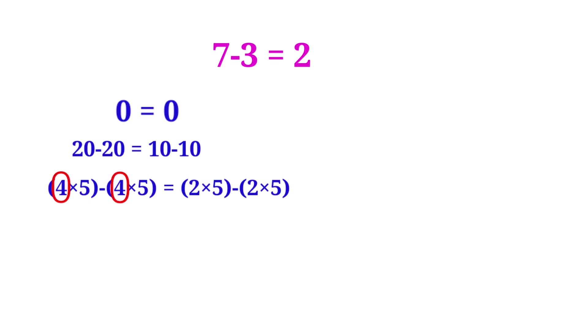Now see here, in the left side 4 is common, and in the right side 2 is common. So now we can take the common terms. Then we can write this as 4(5-5) is equal to 2(5-5).